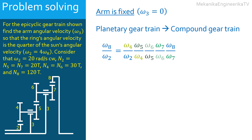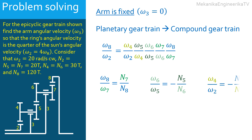The ring 8 and gear 7 are meshed together, thus ω₈/ω₇ = N₇/N₈. The gears 5 and 6 are meshed, hence ω₆/ω₅ = −N₅/N₆. Also, the sun gear 2 is meshed with planet gear 4, hence ω₄/ω₂ = −N₂/N₄. On the other hand, planet gears 6 and 7 are on the same shaft, hence ω₇/ω₆ = 1. Likewise, planet gears 4 and 5 are on the same shaft, hence ω₅/ω₄ = 1.